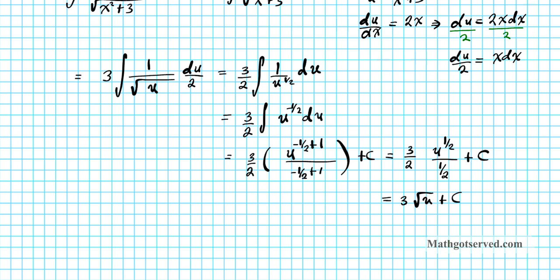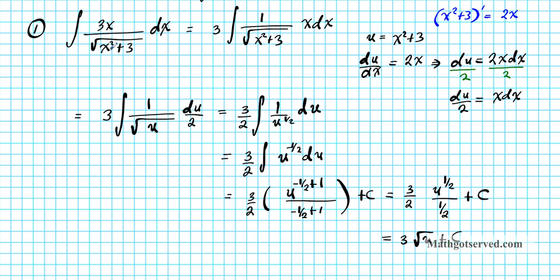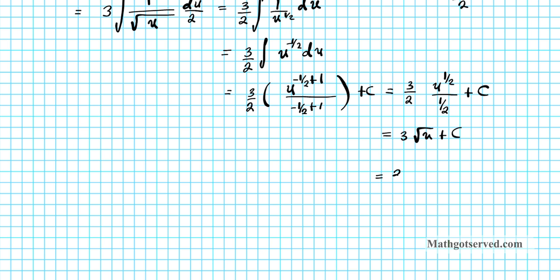Are we done? Absolutely not. The original function is in terms of x, but our answer is in terms of u, so we need to resolve that discrepancy. We declared u to be x squared plus 3 earlier to enable integration. Now that we're done integrating, we replace u with its original value. Our final answer is 3 times the square root of x squared plus 3, plus c. This is the antiderivative of the original problem.